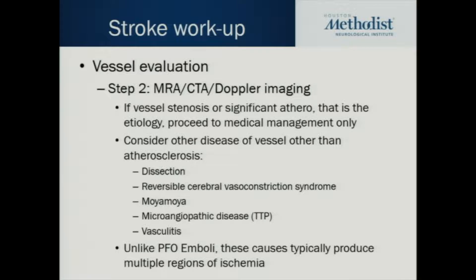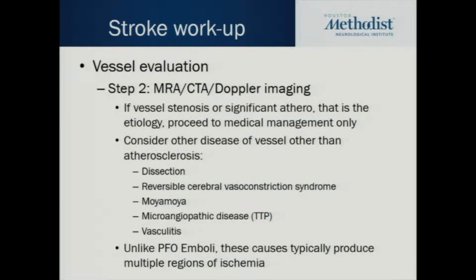For Patient A — the one with only one acute infarct — we move on to vessel imaging: MRA, CTA, or Doppler, looking for atherosclerosis or other vessel disease. If there is a vessel stenosis or significant atherosclerosis, that's the etiology and one should proceed with medical management for atherosclerosis. Other diseases that might show up include dissection, reversible cerebrovascular constriction syndrome, moya-moya, microangiopathic disease, TTP, and vasculitis. In middle-aged and older patients, stroke is relatively homogeneous — a disease of atherosclerosis — but in younger populations it is very heterogeneous with many different causes.